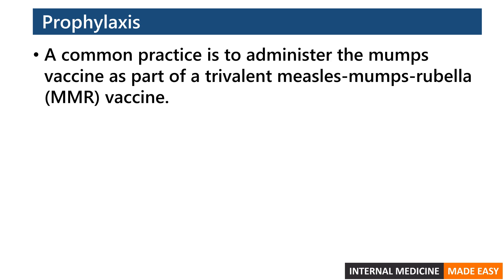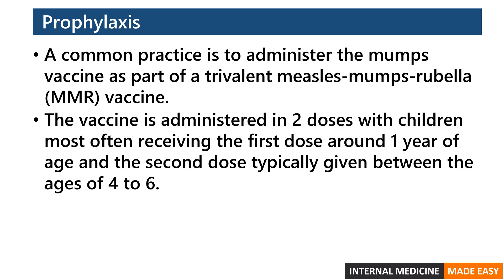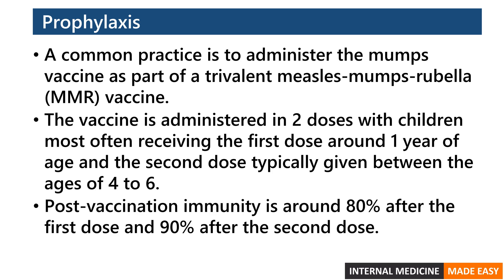Prophylaxis commonly involves administering the mumps vaccine as part of the trivalent MMR vaccine. The vaccine is administered in two doses, with children most often receiving the first dose around one year of age and the second dose typically given between the ages of four to six. Post-vaccination immunity is around 80% after the first dose and 90% after the second dose.